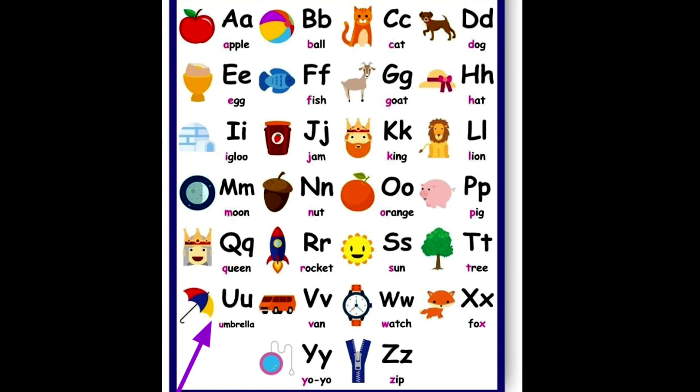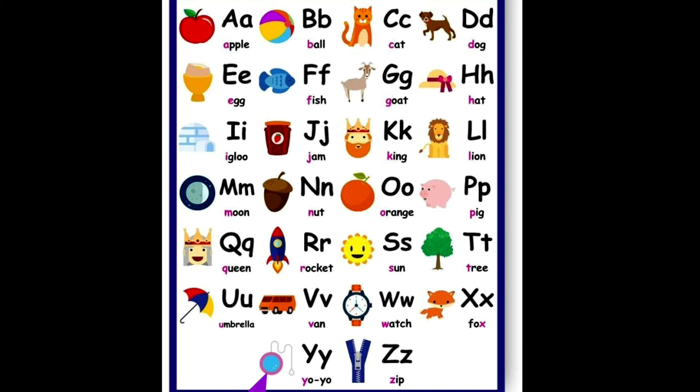U for umbrella, V for van, W for watch, X for fox, Y for yoyo, Z for zip.